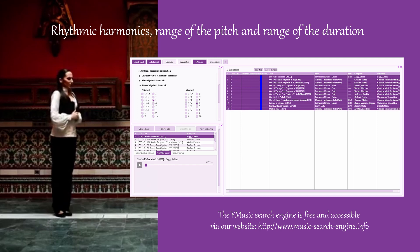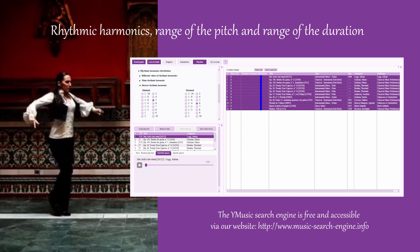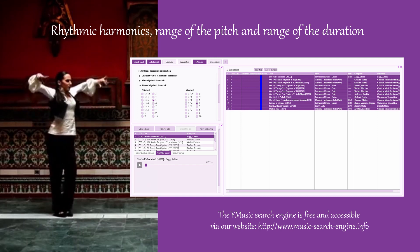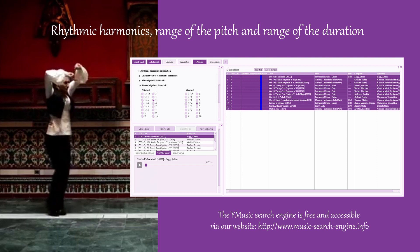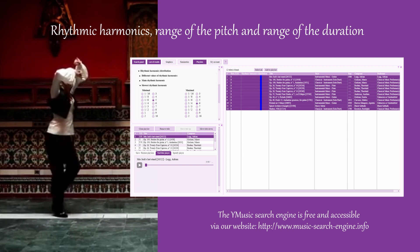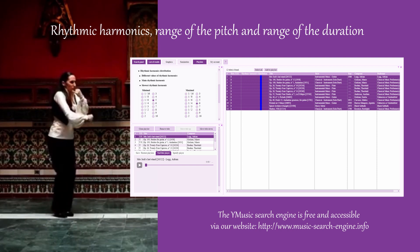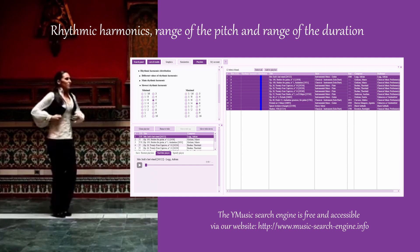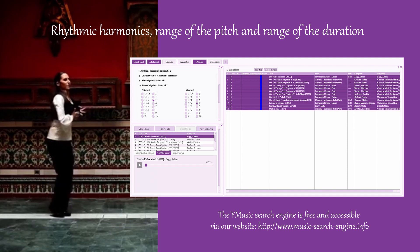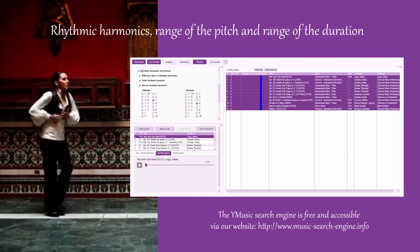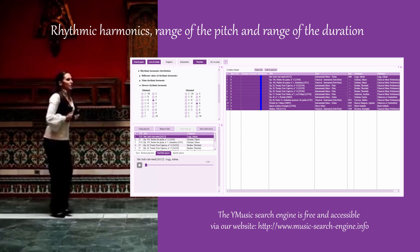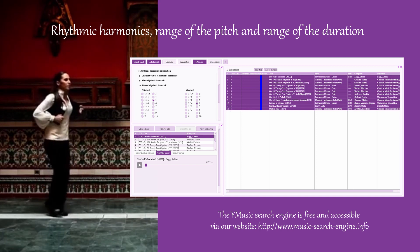Then, let us display the graphics. Let us associate X to Slow HR and Y to Pitch Range. Let us then select the 3 points which stay in the middle of the displayed points. They correspond to 4 pieces of music that we can insert in a new playlist to listen to them, with the help of the corresponding sheet music or not.